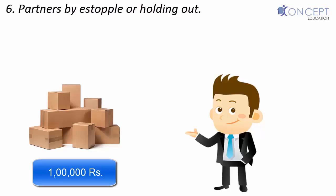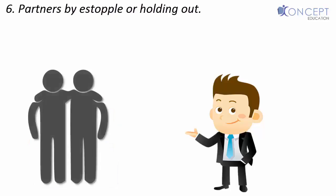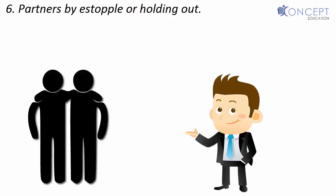So if a person represents himself or lets others believe that he is a partner, which actually he is not, and the other person relies on it and gives any credit, both you and the other person would be liable. And this is called partnership by holding out or estoppel.